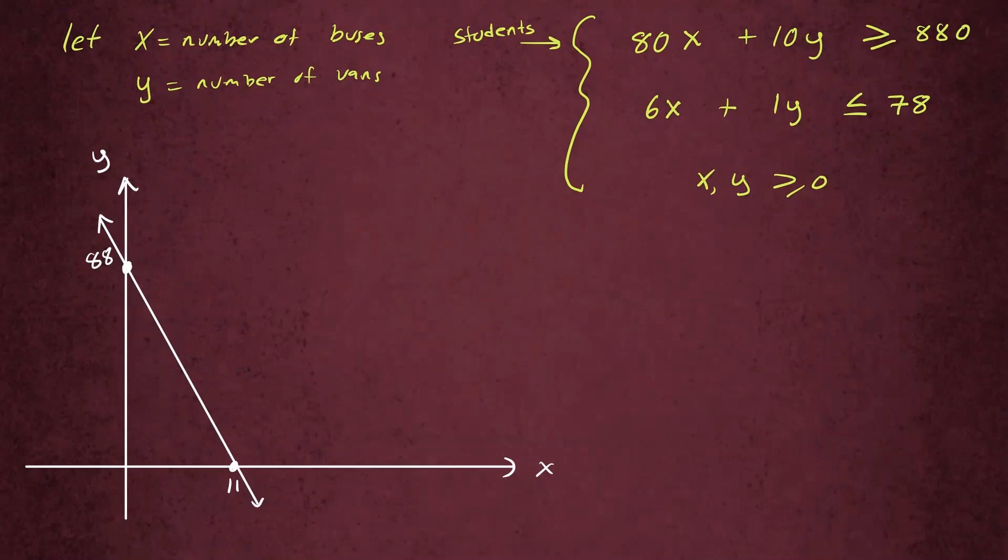Now we're going to shade in a region, either this way or this way. Let's pick a point. Let's pick the origin, 0, 0. If you plug in 0, 0 here, you'll have 0 greater than or equal to 880. That's not true. So 0, 0 is not in the solution region. It has to be to the right. So we're going to shade in this direction. So this is the portion we're going to shade in for this inequality.